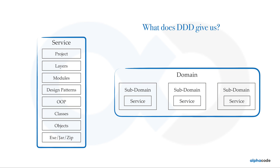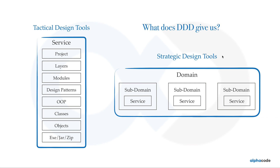Domain-driven design, as I said, is a way to look at things from top down — and we have the domain on top. DDD gives us two kinds of tools. The first is called strategic design tools, which help us solve all problems related to modeling the domain. The second kind is tactical design tools, which help us solve the lower-level implementation problems. Strategic design tools are the most important — if you get a grasp on those, it will really make you a good software architect, developer, or manager.